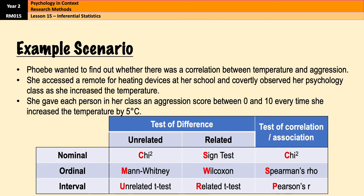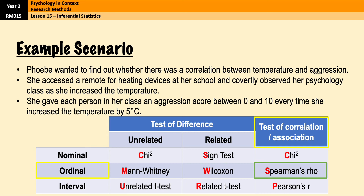Phoebe wanted to find out whether there was a correlation between temperature and aggression. She covertly observed her class and gave each person an aggression score between zero and ten every time she increased the temperature by five degrees. This is a test of correlation. It is ordinal data because she is giving aggression scores — not measuring the temperature itself. If they were measuring temperature, it would be interval data. Because it's a test of association with ordinal data, they would use Spearman's Rho.